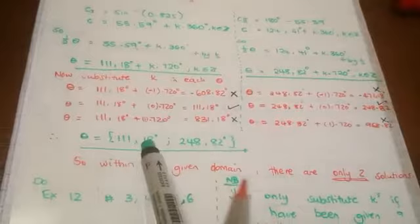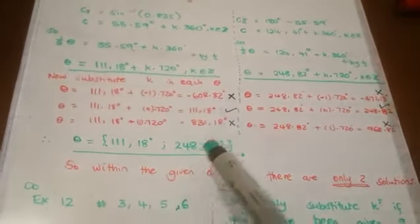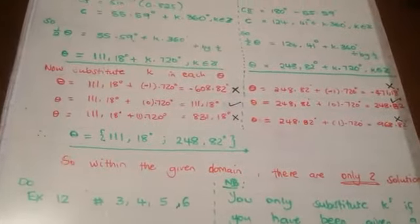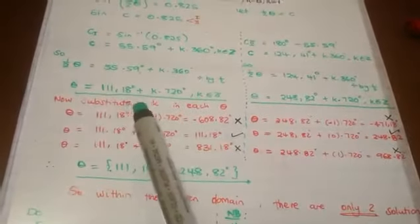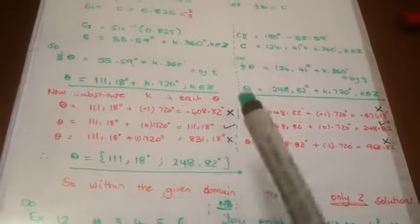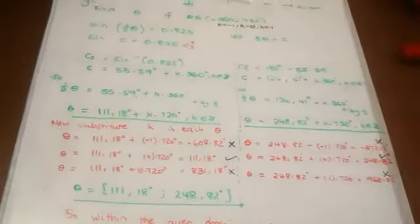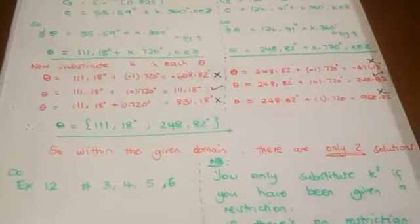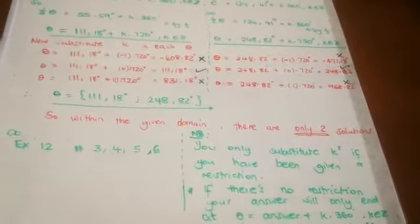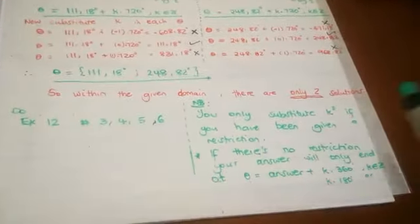Which is 111.18 and 248.82 degrees. So now sometimes you may find that after you have substituted your K values, you have only one solution. Sometimes you can have three solutions. So you just choose your solutions according to what qualifies to be within this given domain. So within the given domain, there are only two solutions. Please remember that you only have to do this part when the question has given you a restriction.